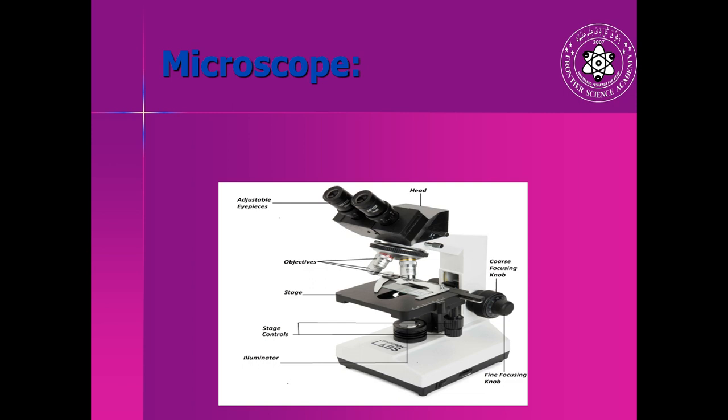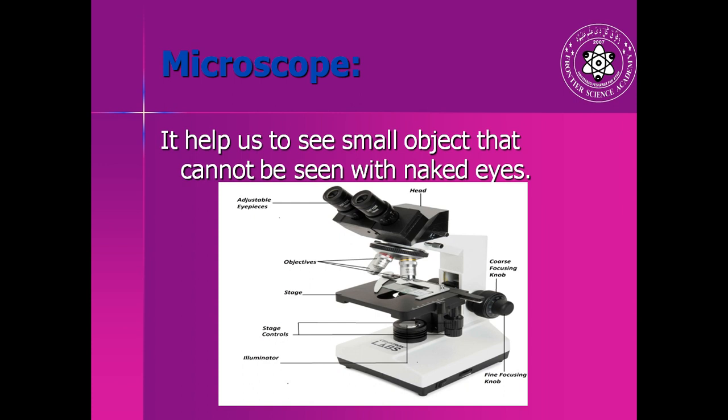Here are some of the instruments that are used in the laboratory. This is a microscope. It helps us to see small objects that cannot be seen with the naked eye. These are the lenses - they magnify an object. This is the stage where an object is placed, and these are the eyepieces through which the image of the object is observed.